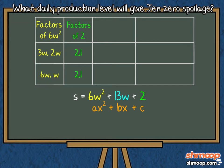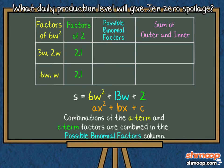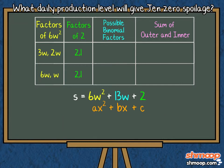The third and fourth columns use the previous two columns to decipher possible B terms. Combinations of the A term and C term factors are combined in the possible binomial factors column. If we take a look at the first row of the first two columns, our possible binomial factors come out to...